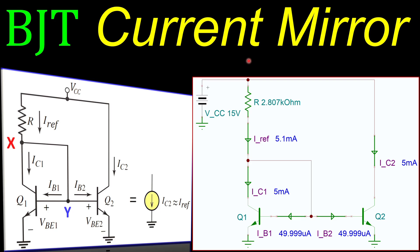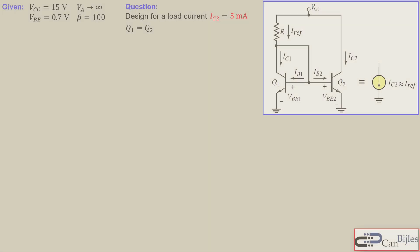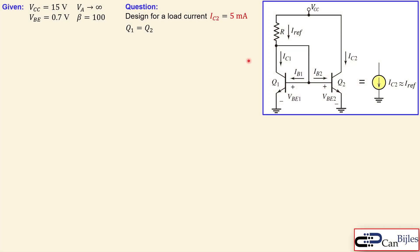Hi everyone and welcome to a new video. We start with the new series about current sources using the BJT and MOSFET. This will be example number one where we discuss the current mirror in a very simple format. We will work out the calculations and also verify these in SPICE simulations. So let's look at our circuit.